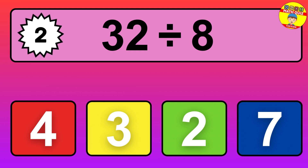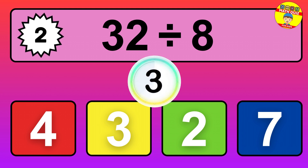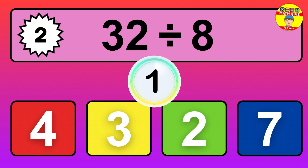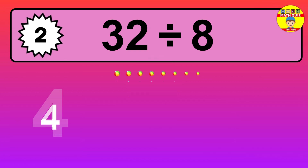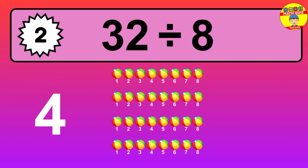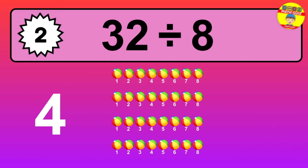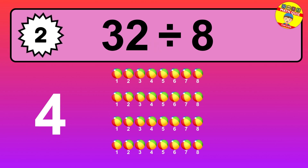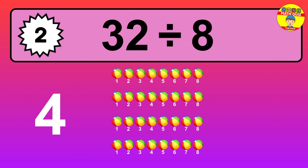32 divided by 8 is... time to think. Let's go to the solution. Divide the number 32 by 8. Each group contains 8 units, so dividing 32 by 8 results in 4 equal groups. Thus, the result is: 32 divided by 8 equals 4.